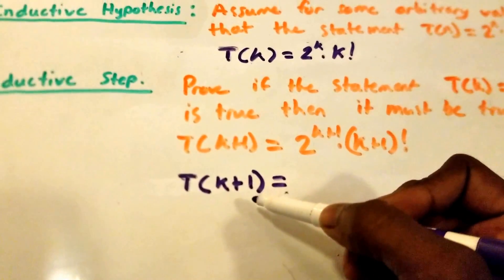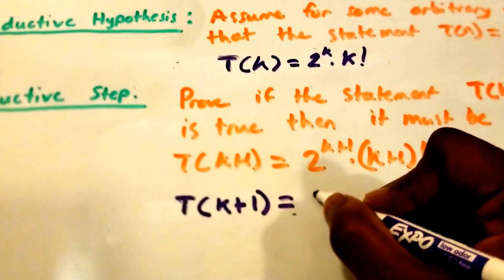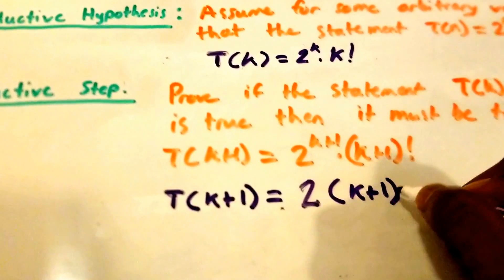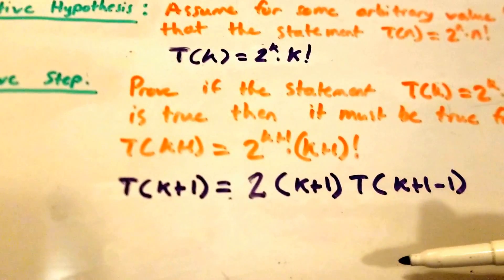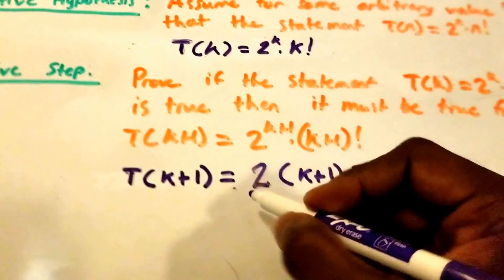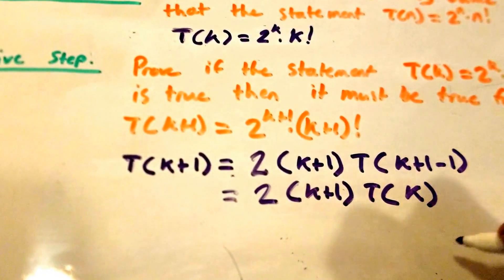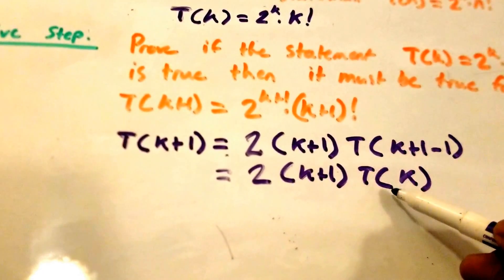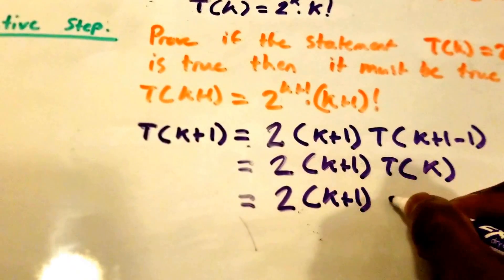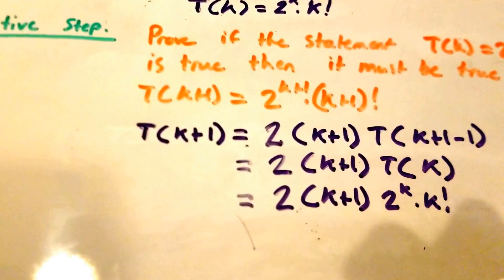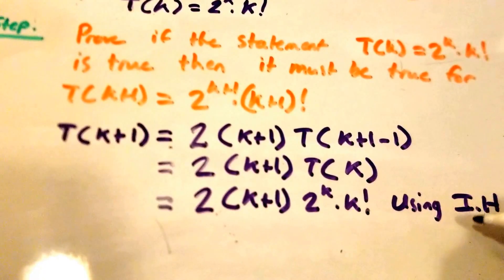T of k plus 1: plugging k plus 1 in for n gives us 2 times k plus 1 times T of k plus 1 minus 1, which simplifies to 2 times k plus 1 times T of k. Now we have T of k, so we can apply our inductive hypothesis and replace it with 2 to the power of k times k factorial.